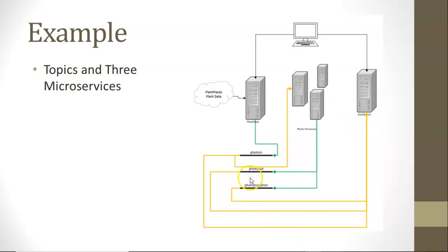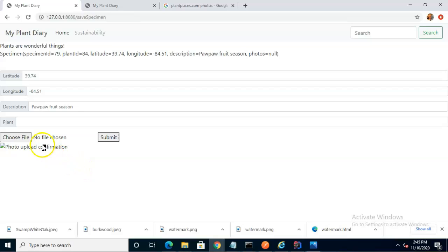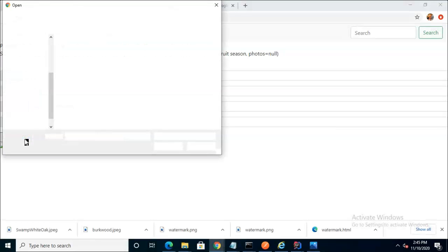We have a third microservice which is listening — and only listening, not writing — to each of these three topics, and it uses this information to determine what has been processed. If something appears in PhotoIn and in PhotoOut, that means successful processing. If it appears in PhotoIn but nowhere else, it's waiting to be processed. If it appears in PhotoException, something went wrong. This process could be implemented in many different programming languages.